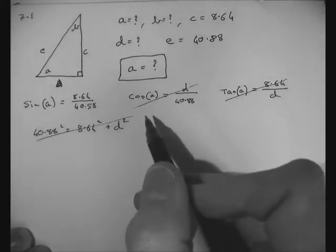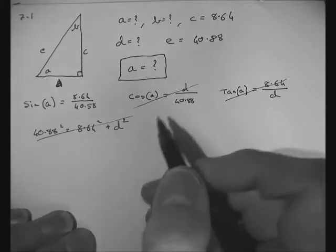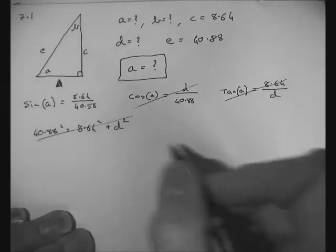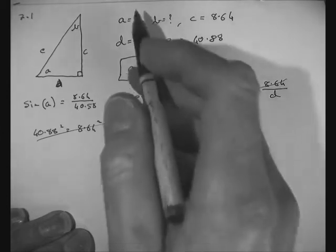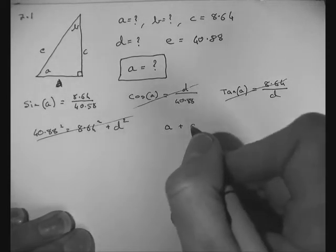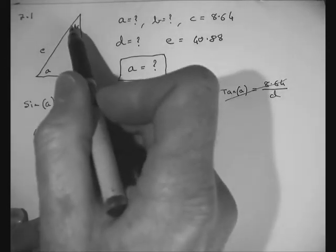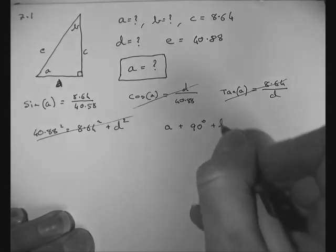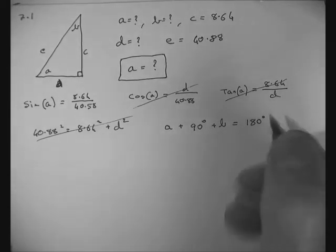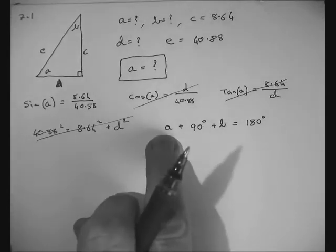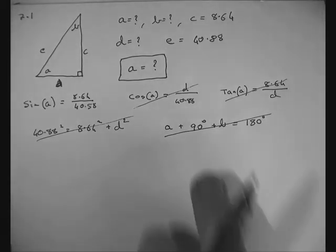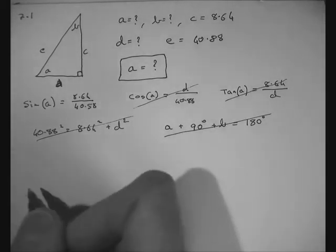Another tool at our disposal is that the sum of the angles, the internal angles in a triangle, must add up to 180 degrees. So angle A, we don't know, plus 90 degrees for the right angle, plus angle B which we don't know, equals 180 degrees. This is of no use to us because it's an equation in two variables. We can only solve this type of equation for one variable unless they're simultaneous equations.